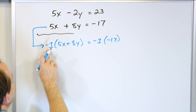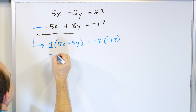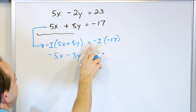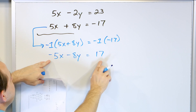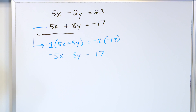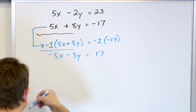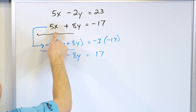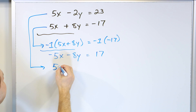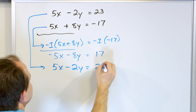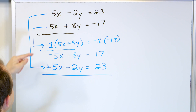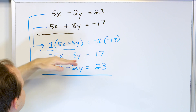I'm going to multiply negative 1 times the second equation: negative 1 times 5x gives negative 5x, negative 1 times 8y gives negative 8y, and the right side becomes positive 17. So this is the new equation, which looks different than the original but actually represents the same thing. What I'll do is take the top equation and write it underneath: 5x minus 2y equals 23, and add these equations together.